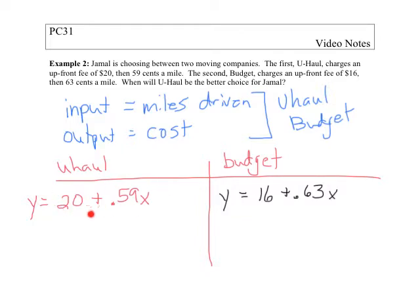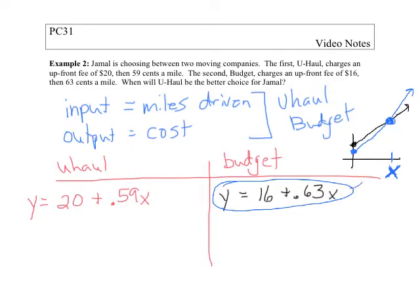So right off the bat if he chooses U-Haul and drives one mile he's going to pay more than if he chooses budget and drives one mile. So what we have is U-Haul is more expensive but because the per mile charge is less there probably comes a time where U-Haul is going to cost less. If you think about this graphically what you have is U-Haul starts at $20 and it increases at some rate whereas budget starts at a lower value but increases at a faster rate so at some point, some number of miles driven it's going to be more expensive to drive the budget one. So we want to find out at what point is it more expensive.